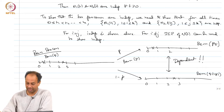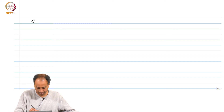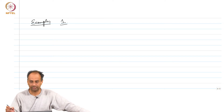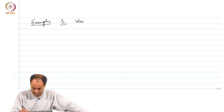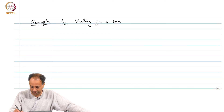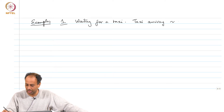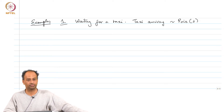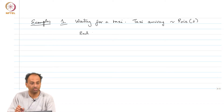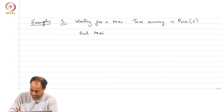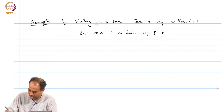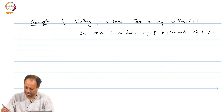Let's do a couple of examples so that you know how to apply these things. You are waiting for a taxi — you are standing somewhere and taxis are arriving according to a Poisson process of rate lambda. Each taxi is available with probability p and occupied with probability 1 minus p, and this is independent of other taxis.